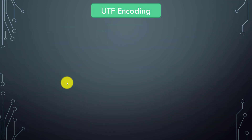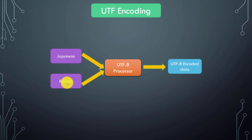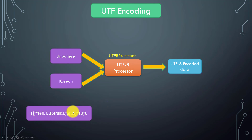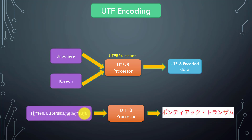Let's start with UTF encoding. When you have events coming in different languages other than English, such as Japanese or Korean, the UTF-8 processor gets involved. It outputs UTF-encoded data. The component name is the UTF-8 processor. For example, if I have this Shift-JIS data — this is Japanese data — if the UTF-8 processor is engaged, the output will look like this, and this is what will actually be indexed into Splunk.